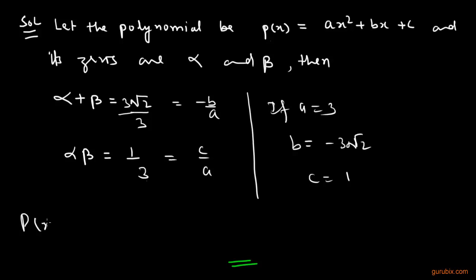Therefore p(x) is equal to, if we put the values of a, b, c in this polynomial, we get 3x square minus 3 root 2x plus 1. So this is our required polynomial. Thank you.